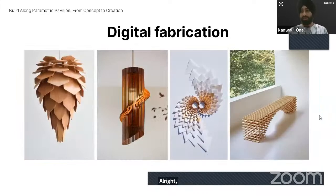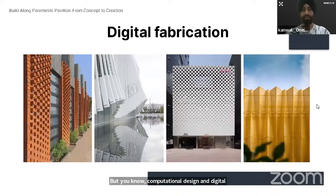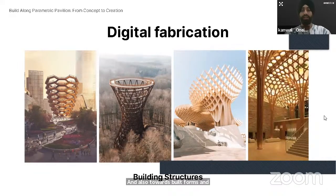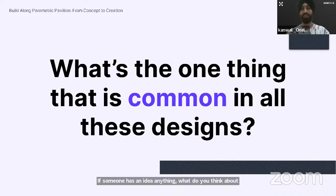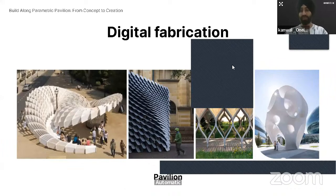Digital fabrication is not just limited to pavilions. Computational design and digital fabrication together can range up to product design, facade design, and also built forms and structures like these. What's one thing that is common in all these designs? Attendees respond: parametric design, repeating modules, algorithms.